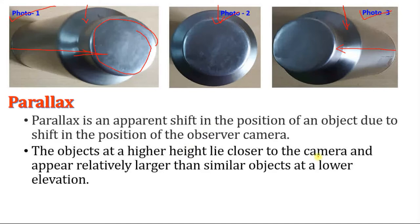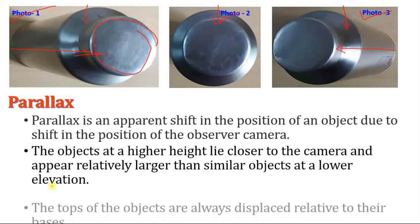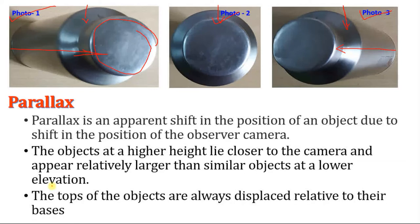An object at a higher elevation lies closer to the camera and appears relatively larger than a similar object at a lower elevation. If you think about a tall tree or a mountain, such objects appear very close to the camera and show as relatively large, while hills of lower height appear smaller in the photographs. The tops of objects are always displaced relative to their base — for example, the top of the bottle is displaced compared to the base of the object.